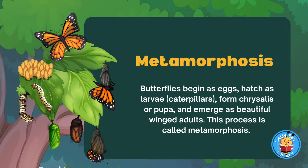Butterflies begin as eggs, hatch as larvae or caterpillars, form a chrysalis or pupa, and emerge as beautiful winged adults. This process is called metamorphosis.